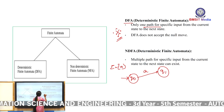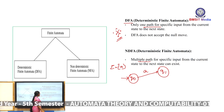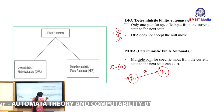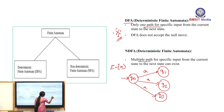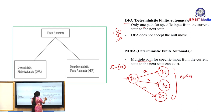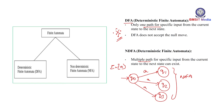In contrast, in an NFA, multiple paths for a specific input are allowed. From Q0 on reading A, you can have transitions to both Q2 and Q3. In today's session we will be completely concentrating on the DFA.